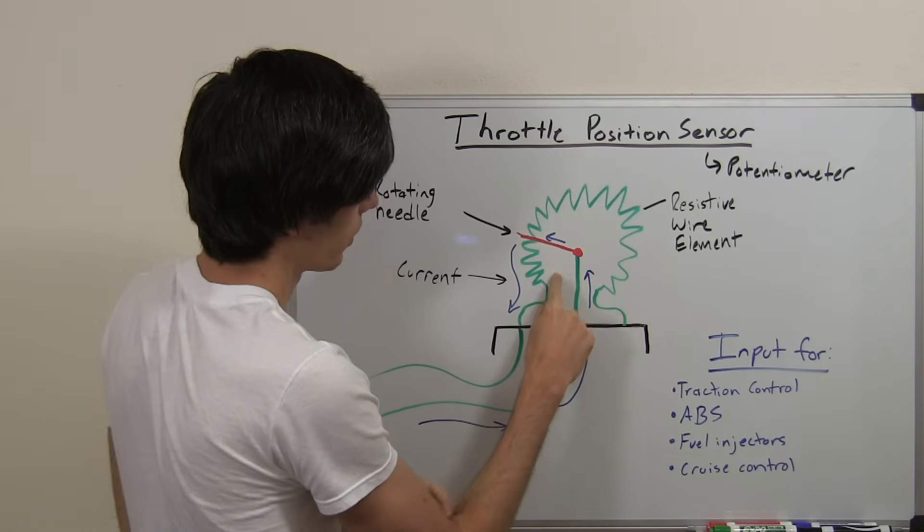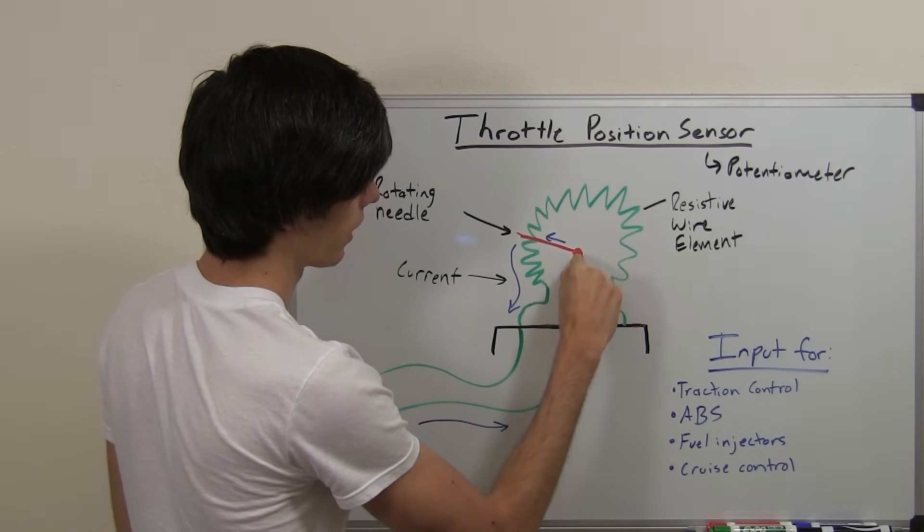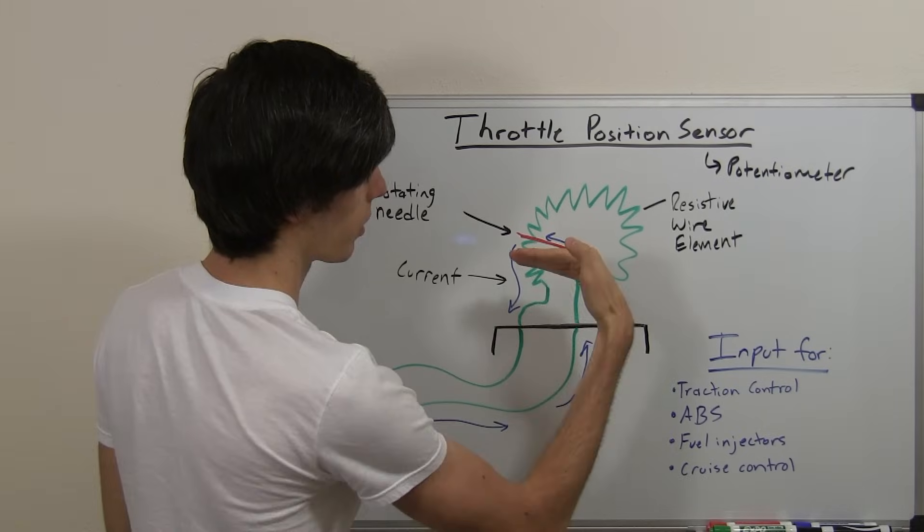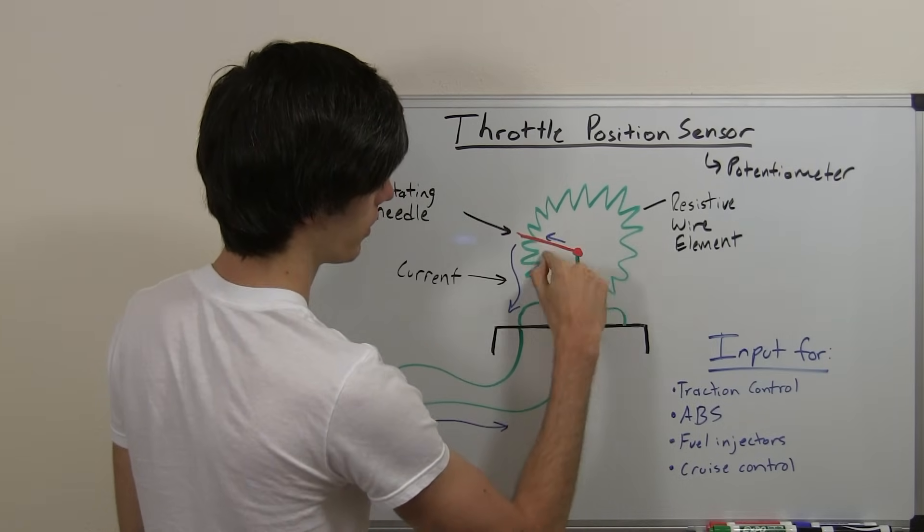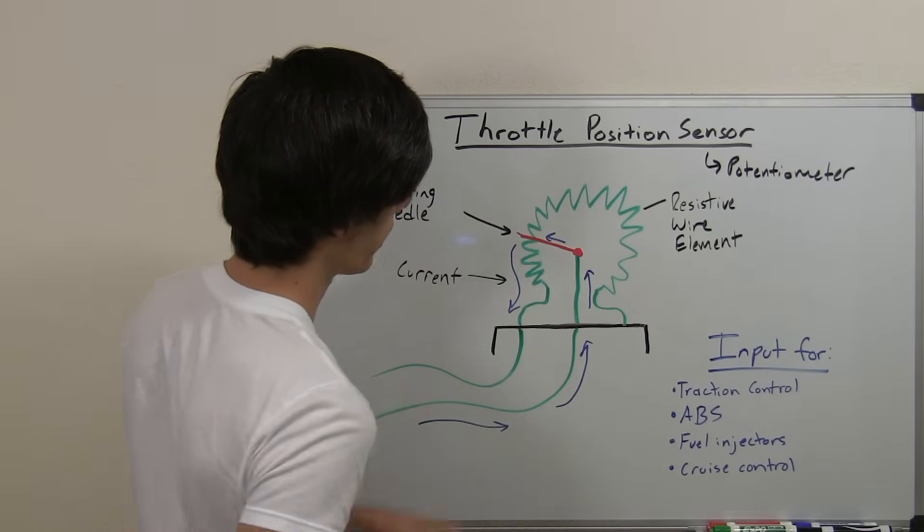Within this potentiometer you've got this needle that is connected with that butterfly valve. So as the butterfly valve within the throttle body opens and closes, it moves this needle up and down.